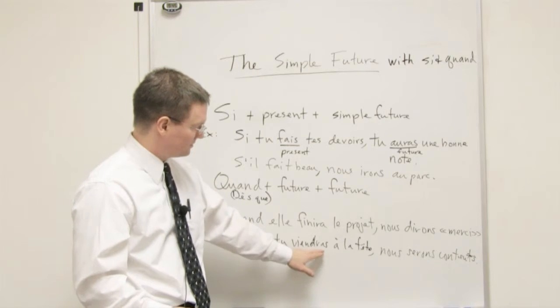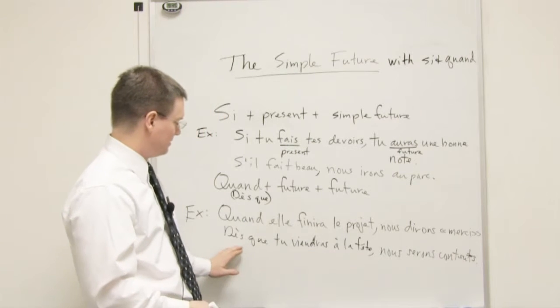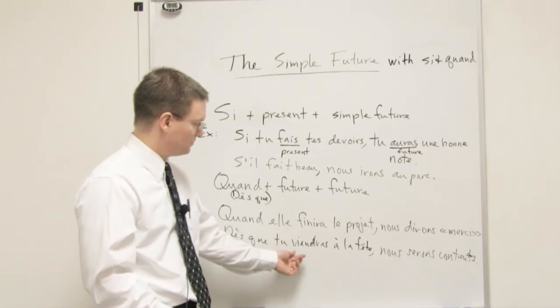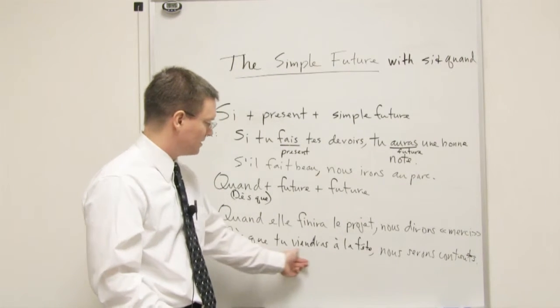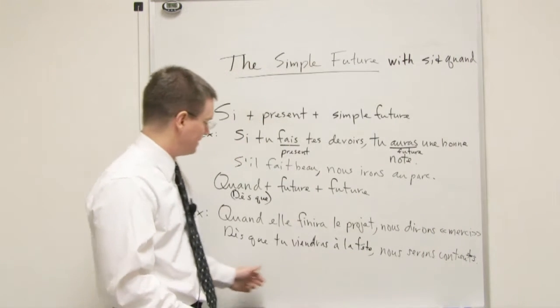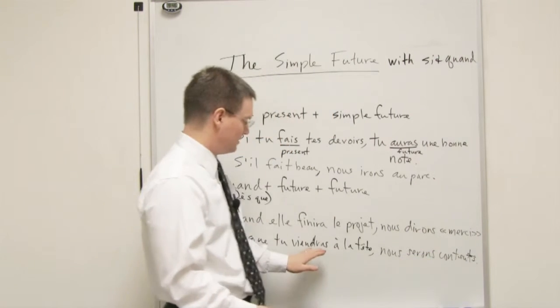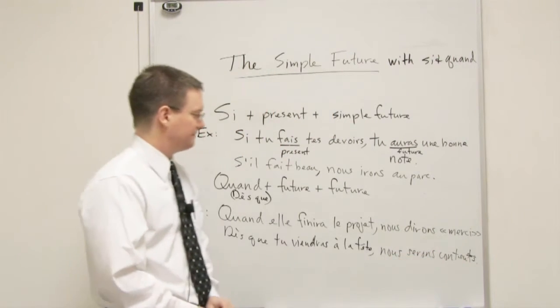Notice, in English, this first verb is translated in the present, as soon as you arrive. But literally in French, it's saying as soon as you will come, or as soon as you come. In English, it's as soon as you come to the party. But in French, we say as soon as you will come to the party, we will be happy. You have to use the future for both of these.